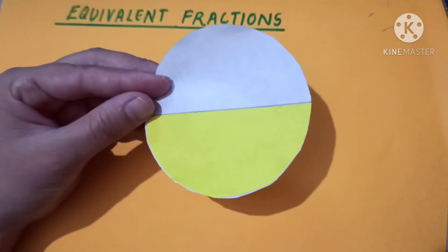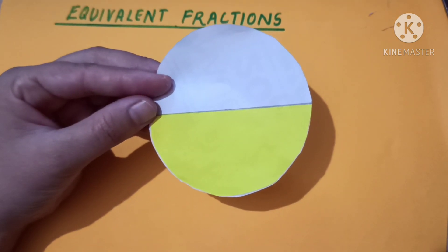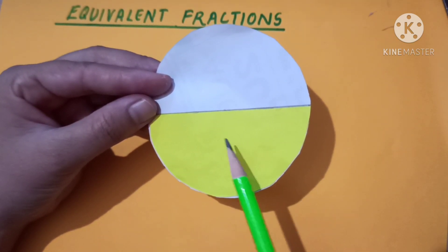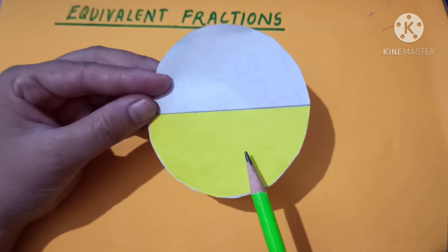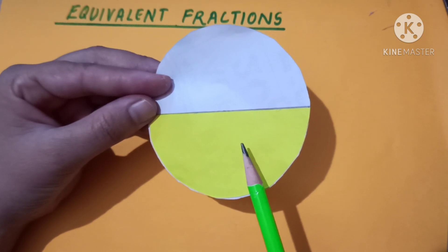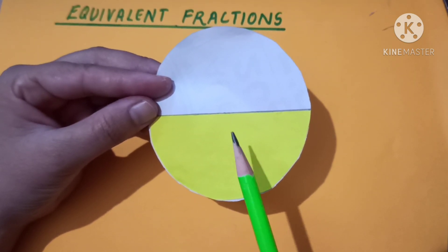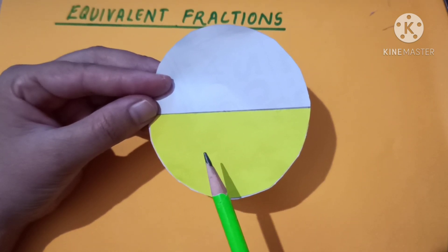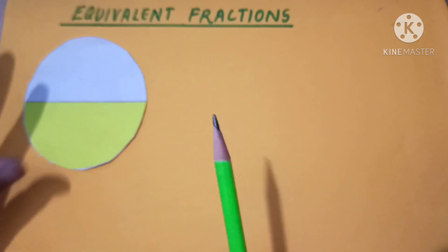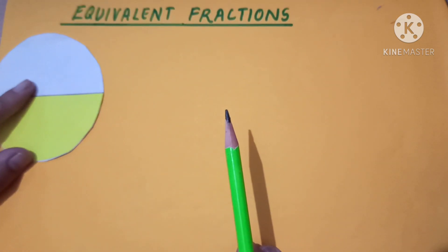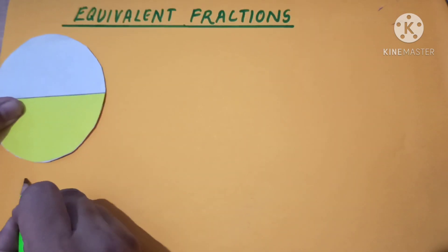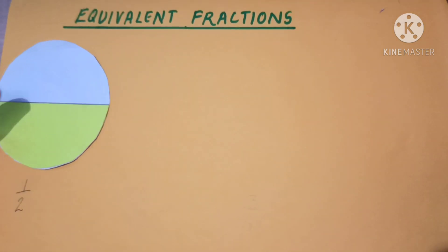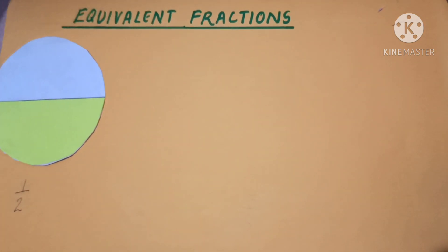For example, I have this figure — the circle. As you can see, it is divided into two equal parts, and out of two equal parts, one is yellow. So the fraction of the yellow part will be one upon two, as the total number of parts are two. So the fraction of the yellow part is one by two.